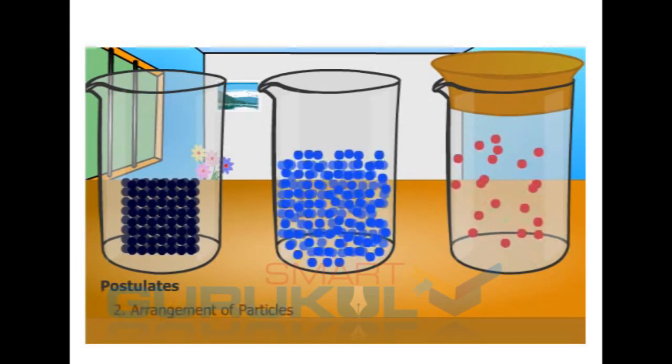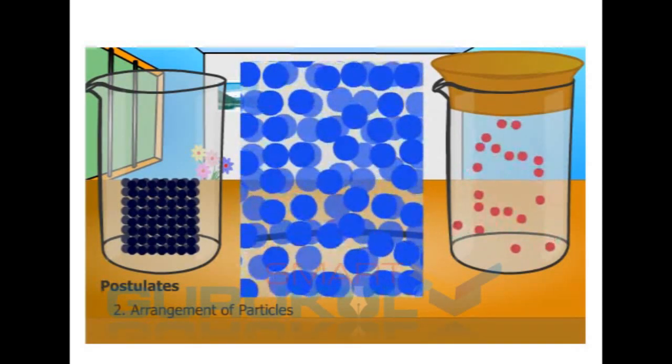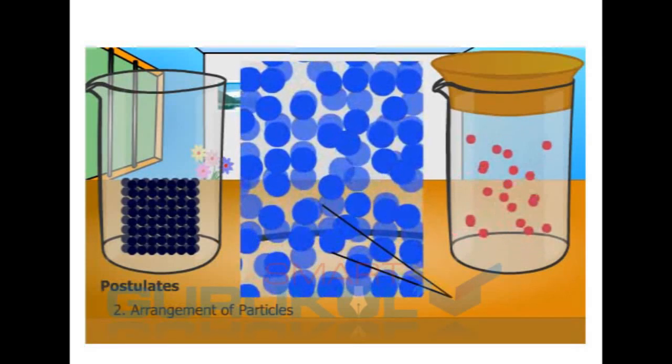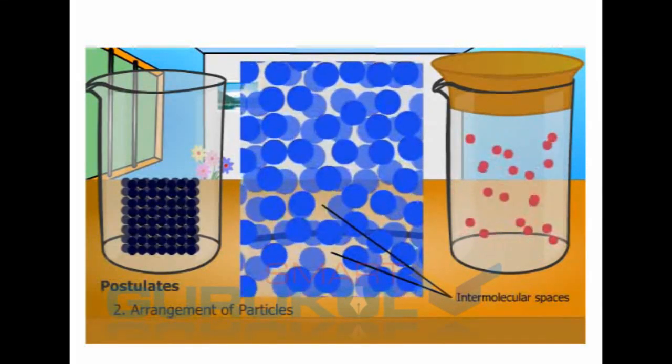The second one is arrangement of particles. Whenever the particles are arranged, they have some spaces lying in between them. The spaces are called intermolecular spaces.